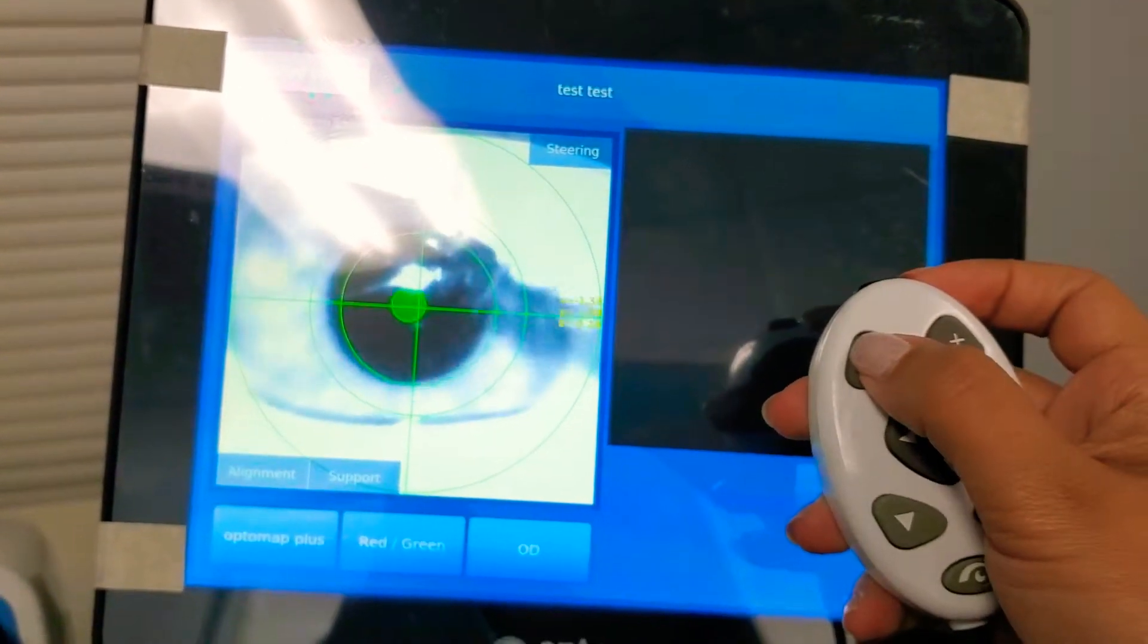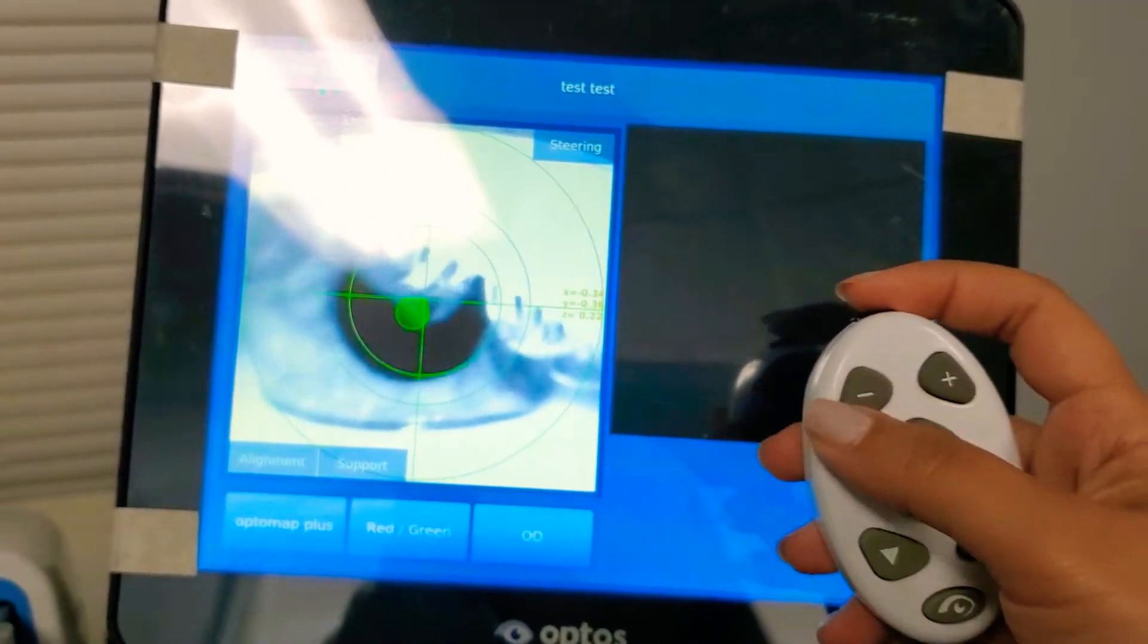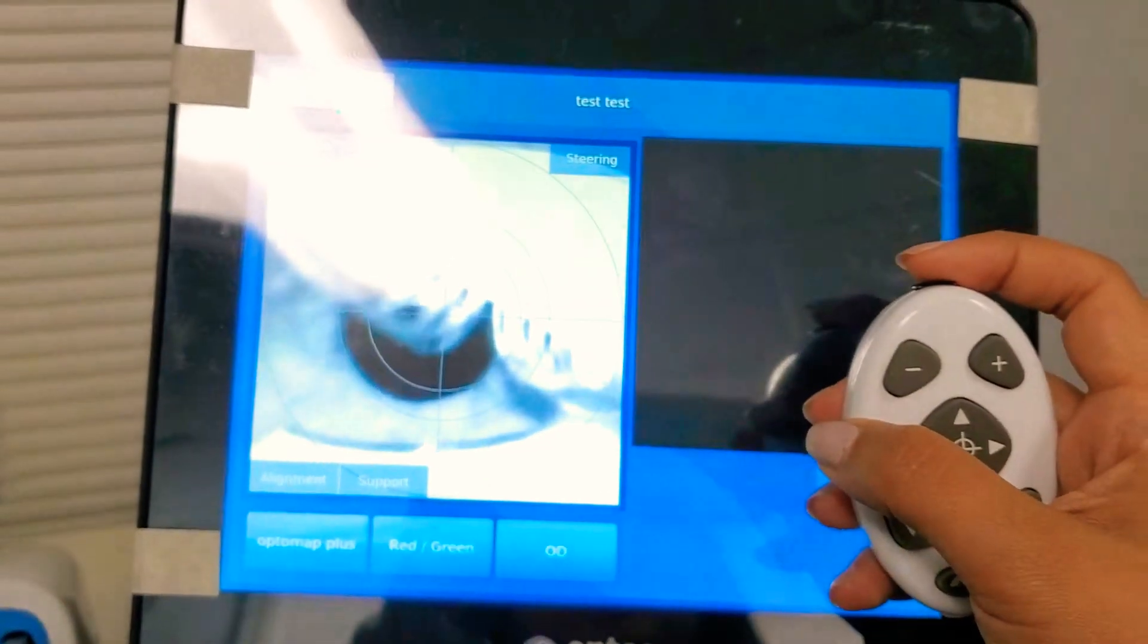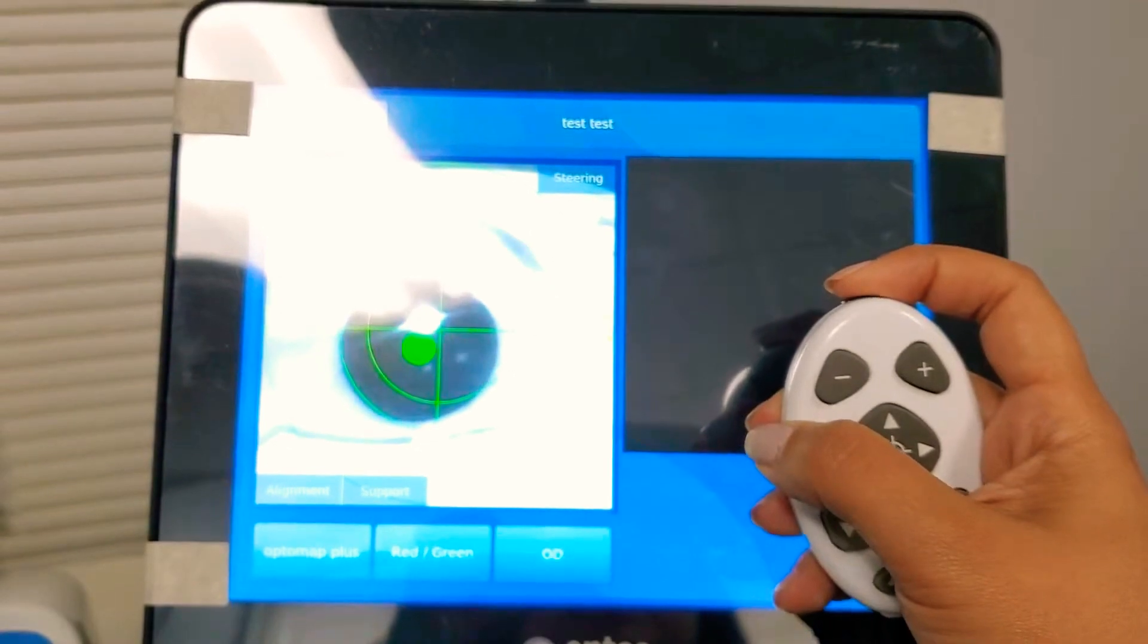And we want the color to be green. All right, and we can go zoom out, zoom in. We want green. And once it's there, here's to capture. Ask the patient to open their eye wide. Open wide. One, two, three.